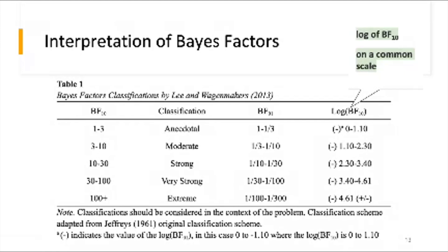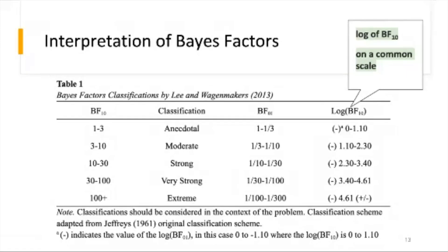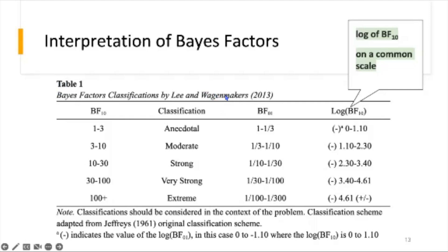Taking the log of the Bayes factor gives the same magnitude regardless of which model is in the numerator or denominator — only the sign changes. A positive value indicates more evidence for the model in the numerator. For example, a log Bayes factor of 1.10 suggests evidence in favor of the alternative model, whereas a log Bayes factor of −1.10 would suggest evidence in favor of the null model.